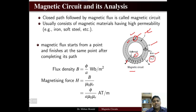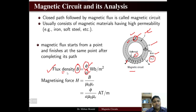We will now see some terms and derivations. Flux density B — the notation B is always used for flux density — is basically flux per unit area. We use phi for flux and A for the area of cross section. The unit of flux density is Weber per meter square.